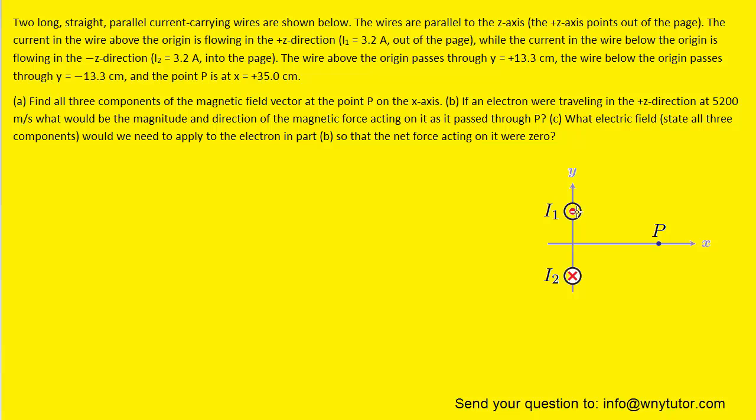Our first step is to find the distance from wire 1 to point P, and we can do that by using the Pythagorean theorem and the given distances. When you solve for that distance, you get approximately 37.4 centimeters. We're going to use the standard unit of meters, so we'll move the decimal over two places to the left, giving us 0.374 meters.